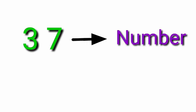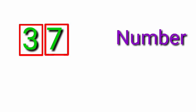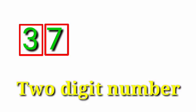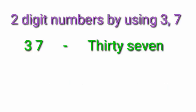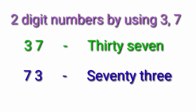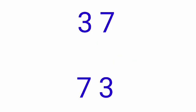For example, 37 is a number. It has 2 digits — they are 3 and 7. So 37 is a 2-digit number. We can write another 2-digit number by using 3 and 7. That is 73. Are both the numbers 37 and 73 equal? No, because the places of digits are different in both the numbers 37 and 73.